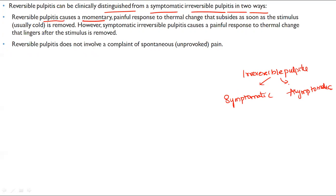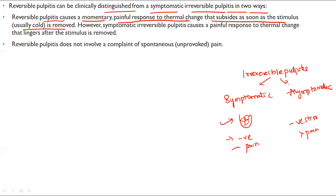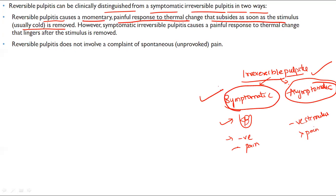Reversible pulpitis causes a momentary painful response to thermal change that subsides as soon as the stimulus is removed. If there are no symptoms even though infection is present, it is called asymptomatic irreversible pulpitis. If there is infection and the pulp still has some vitality so the fibres can sense pain, that is called symptomatic irreversible pulpitis.